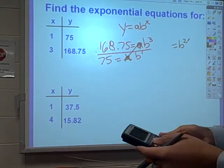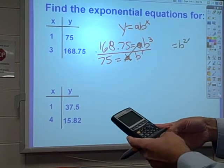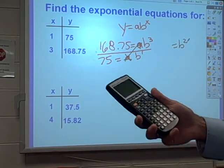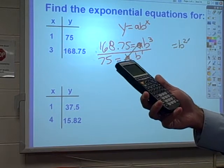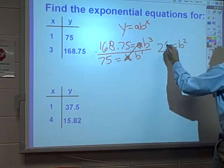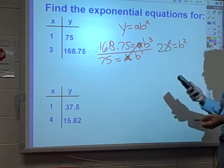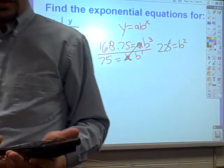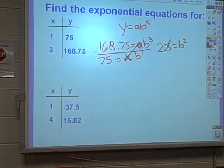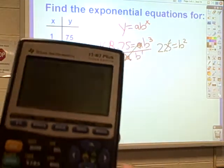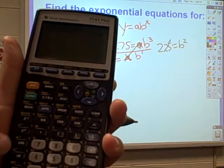So I get out the calculator. 168.75 divided by 75 equals 2.25. Which equals b squared, so then what I want to do is take the square root of that. And again, just to make sure that everybody knows what the shortcut is with this.